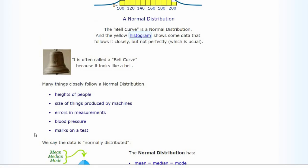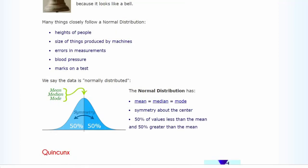These are some things that follow normal distribution: height of people, size of things produced by machines, errors, blood pressure, marks on a test. This is like a bell curve with symmetry around the axis from the peak. The peak is the mean, median, and mode. Half of the dataset is toward the left and half toward the right, which means 50% of values are less and 50% are greater than the mean.